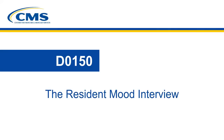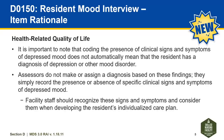For D0150, there have been new item rationale added to the guidance. For health-related quality of life, coding the presence of clinical signs and symptoms of depressed mood does not automatically mean that the resident has a diagnosis of depression or other mood disorder. Assessors do not make or assign a diagnosis based on these findings; they simply record the presence or absence of specific clinical signs and symptoms of depressed mood. Facility staff should recognize these signs and symptoms and consider them when developing the resident's individualized care plan.